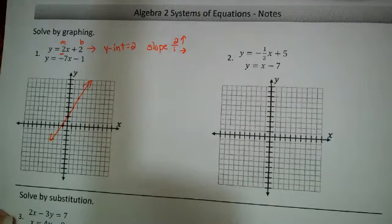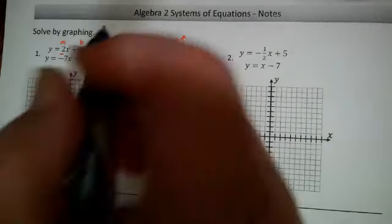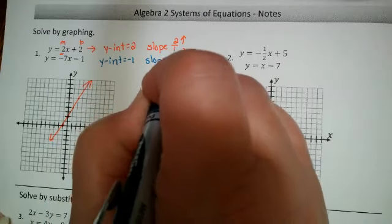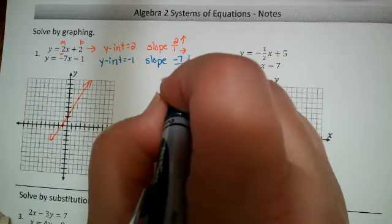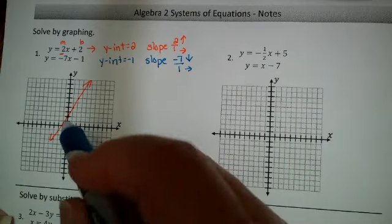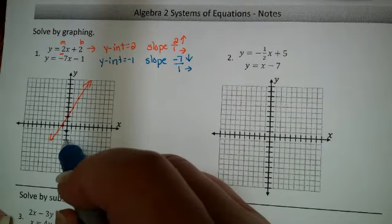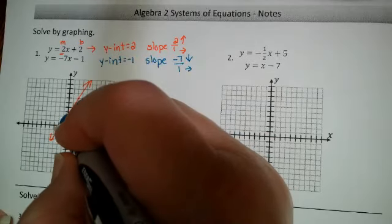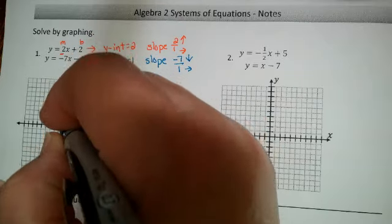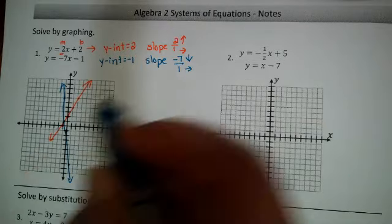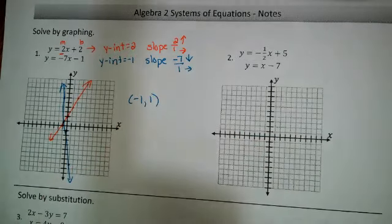Our goal is to find out where these two lines intersect, and that's going to be our solution to the system. Next we have negative 7x minus 1. The y-intercept is negative 1, and the slope is negative 7 over 1, meaning we go down 7 and over 1. So we start at negative 1 on the y-axis, count down 7 spaces and over 1. When I connect the dots, I think the intersection is right at negative 1, 1, but we're going to check that in our calculator to be sure.